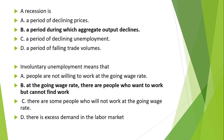Involuntary unemployment means that people are willing to work at the going wage rate but cannot find work. There are various types of unemployment — structural, natural, and involuntary. Involuntary unemployment specifically refers to workers who are willing and able to work at the current wage rate but are unable to find employment. Option B is the correct option.